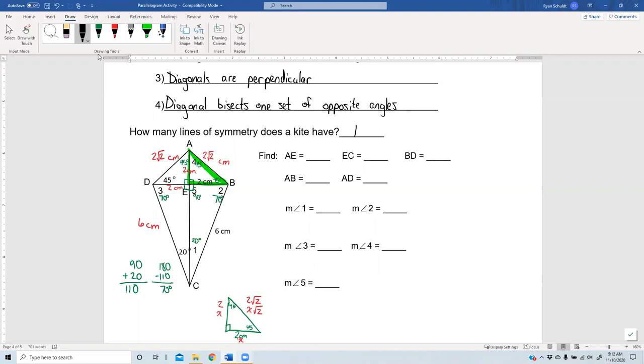So let's see. They asked about AE, and we found it. It's two centimeters. EC—yeah, we haven't found that one, so let's skip it for now. BD? Well, if I go all the way from B to D, I have two plus two, which is four centimeters.